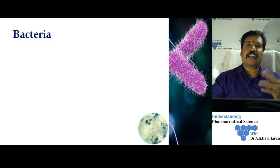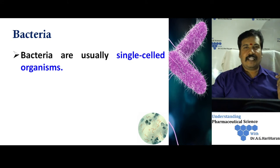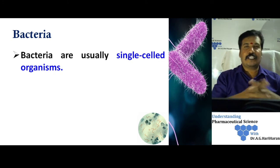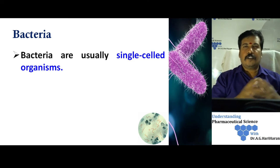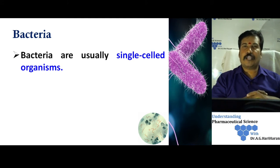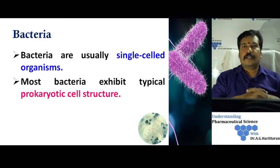First we will understand what is a bacterium. Bacteria is basically a unicellular microorganism — it cannot be seen with the naked eye, so we need a microscope to view this single-celled organism. We can classify cells into two major groups: one is called a prokaryote, and the second is the eukaryotic cell. Bacteria falls into the group of the typical prokaryotic cell structure.